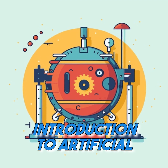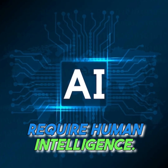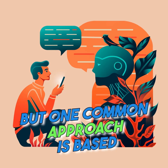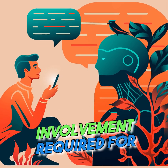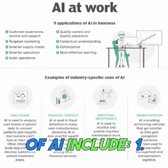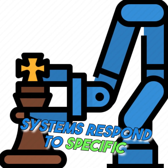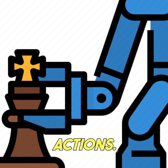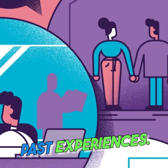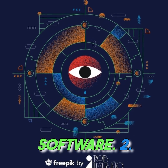Introduction to artificial intelligence: AI refers to the ability of machines to perform tasks that would typically require human intelligence. There are several ways to classify AI, but one common approach is based on the level of human involvement required for the system's operation. The three main categories of AI include: 1. Reactive machines — these systems respond to specific situations with predefined actions. They do not have any memory or ability to learn from past experiences. Examples include chess-playing computers and image recognition software.